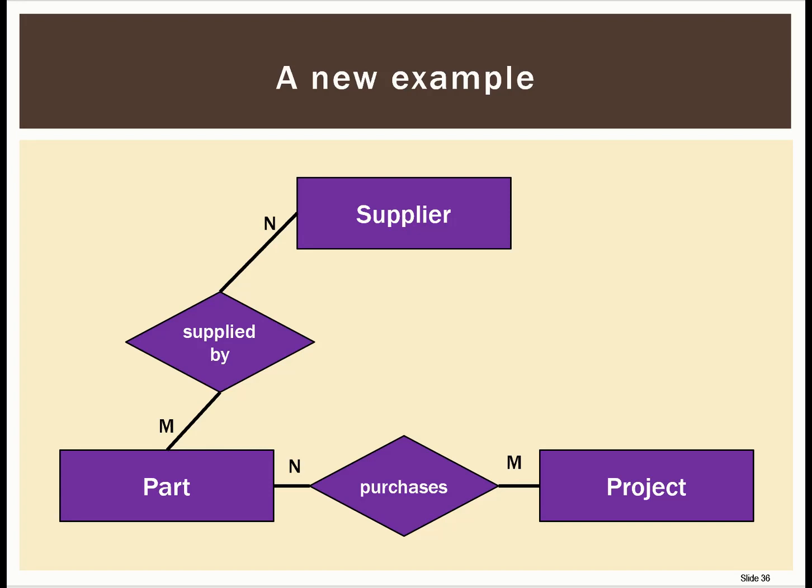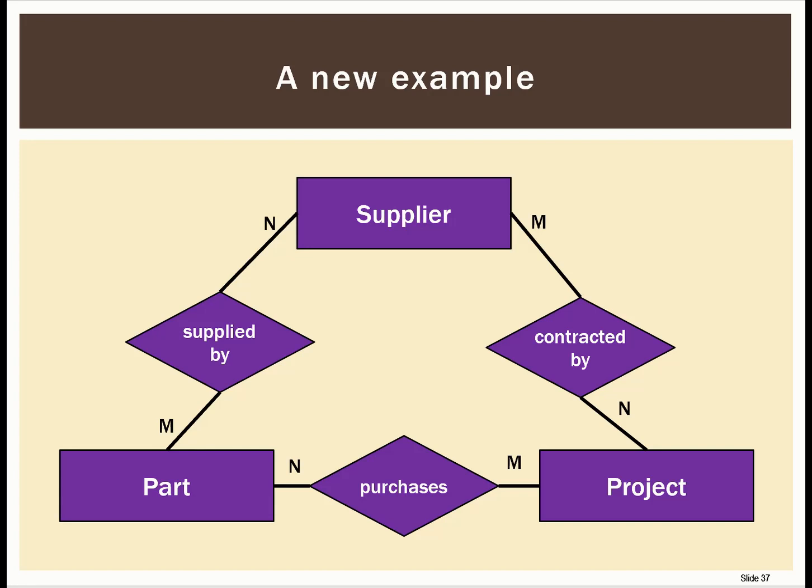There's also a relationship between a project and a supplier — a project can contract multiple suppliers, and a supplier can be contracted by multiple projects. So we have three binary relationships, all of them many-to-many. To model that physically, we need to build a relationship between each pair of entities. The next slide shows the physical model populated with sample data, including the Robinson renovation project and the Nearly Natural ficus tree.